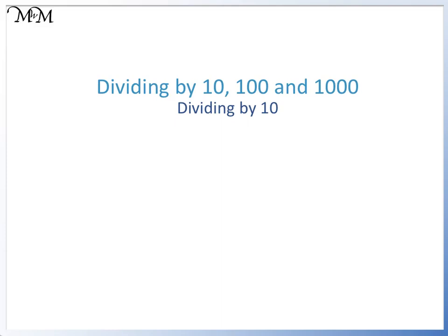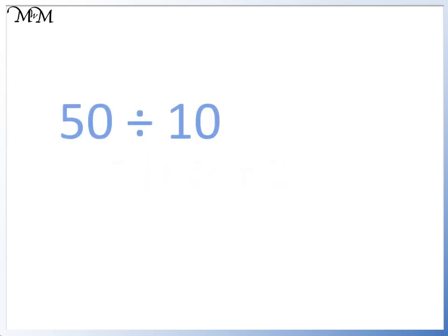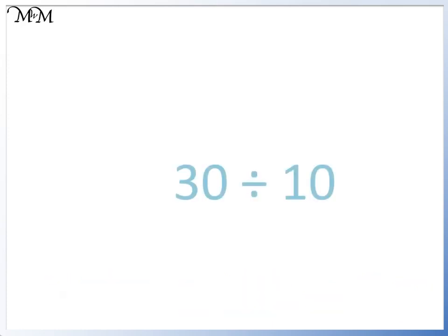Hi and welcome to our lesson on dividing by 10, 100 and 1000. In this lesson we will look at dividing by 10. By using our 10 times table we can easily find that 80 divided by 10 equals 8, 50 divided by 10 equals 5, 100 divided by 10 equals 10, and 30 divided by 10 equals 3.